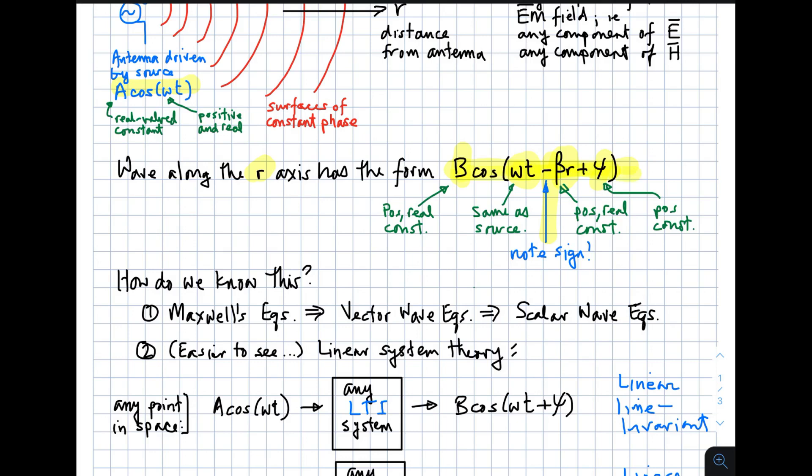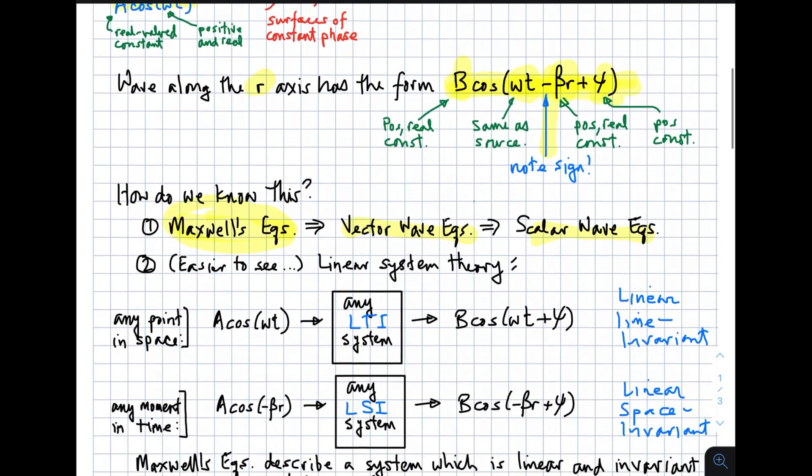How do we know that this should be the form of the wave? The long answer, of course, is that electromagnetic waves are governed by Maxwell's equations. You can take the four Maxwell's equations and reduce them to two wave equations, which have a vector form. And you can reduce those to scalar wave equations. Then you could do the analysis that I just kind of implied in the picture above, and you would see that this is true.